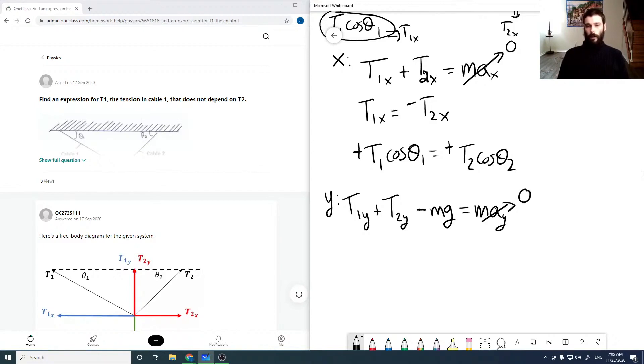Our T1y is T1 sin theta 1. Our T2y is T2 sin theta 2. And so that is going to equal mg, just moving the mg to the other side. And so now what we're looking for is an expression for T1 that does not depend on T2.